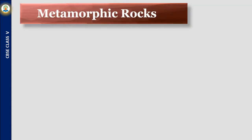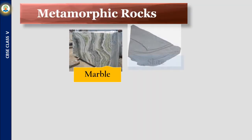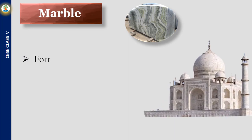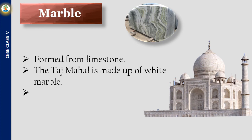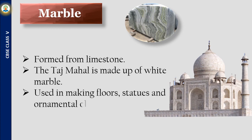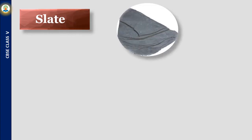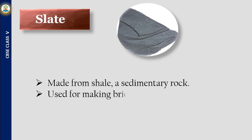Different types of metamorphic rocks are marble, slate, gneiss, and quartzite. Marble is formed from limestone — the Taj Mahal is made of white marble. It is used in making floors, statues, and ornamental objects, and shines when polished. Slate is made from shale, a sedimentary rock, and is used for making bricks, cement, blackboards, and slates.